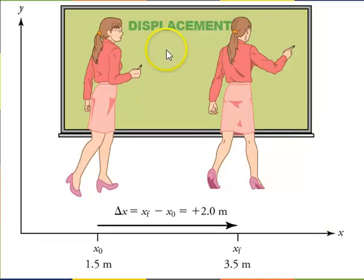Displacement is the change in position. For example, in this textbook they use x with subscript 0 to be initial position and x with subscript f to be final position. So delta x, the displacement, is x final minus x initial. If it ended at 3.5 and it began at 1.5 then your displacement is plus 2 meters.